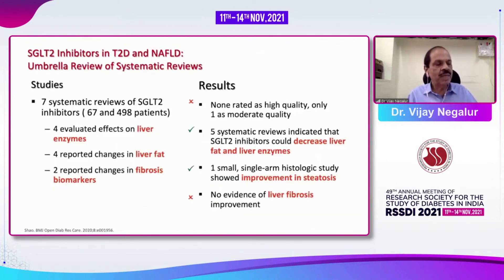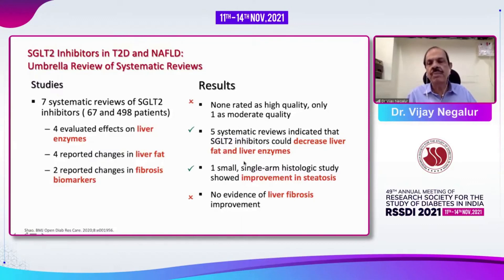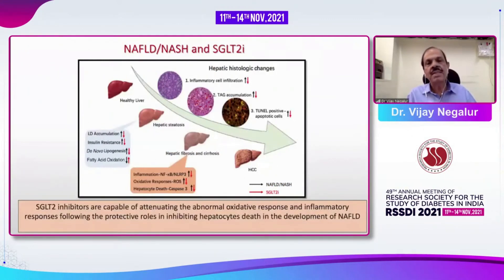SGLT2 inhibitors are also very interesting molecules. Seven studies totaling 498 patients were reviewed — four looked at liver enzymes, four at liver fat, and two at fibrosis biomarkers. Only one study was of moderate quality. Five systematic reviews indicate that SGLT2 inhibitors decrease liver fat content, and one small single-arm historical study showed improvement in steatosis. There is no evidence of reduction in fibrosis. However, data from Hepatology Communications 2021 suggests this drug could be very promising.